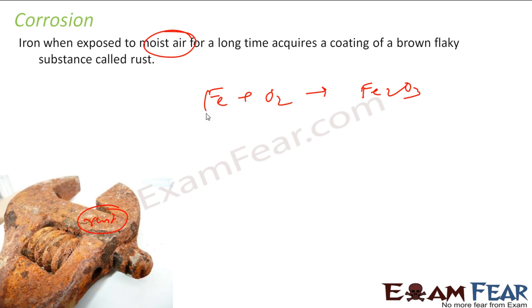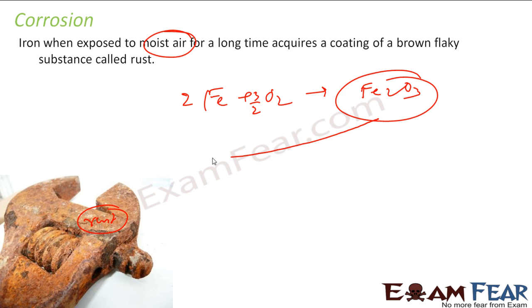You can balance this reaction. So this becomes 2Fe and 3/2 O₂, giving Fe₂O₃. This is nothing but the corrosion reaction. This Fe₂O₃ is rust.